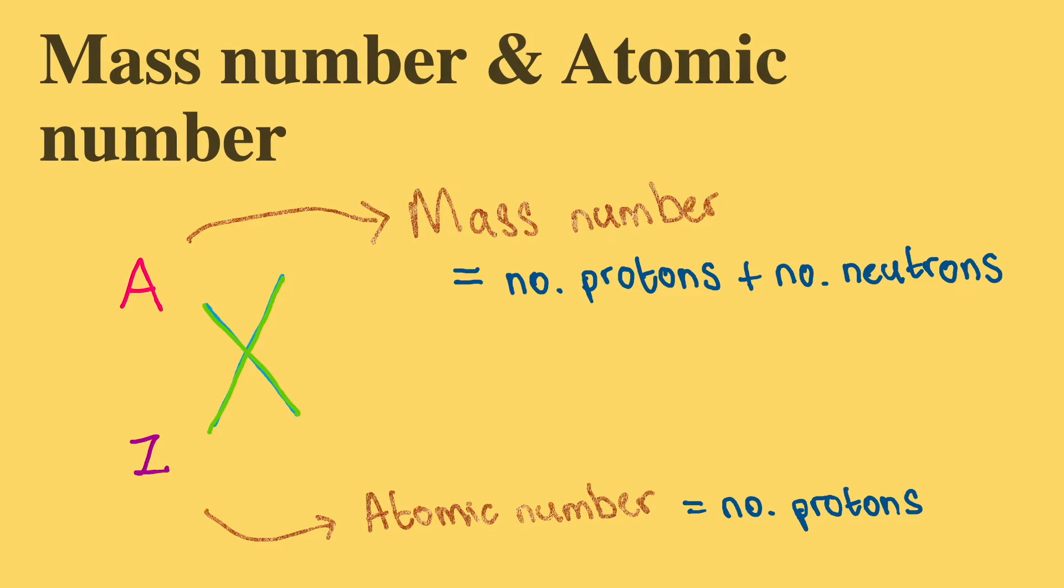Now, the basic method of denoting an element is as follows. Here, Z is the atomic number and A is the mass number. The atomic number of element X is equal to the number of protons. The mass number of element X is equal to the sum of its protons and neutrons.